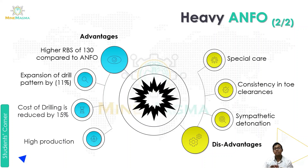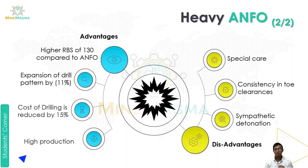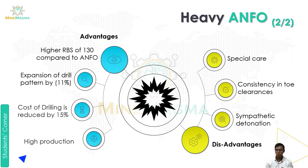The advantage of heavy ANFO is a higher RBS of 130 compared to standard ANFO. The disadvantages include consistency and toe-clearance problems, as well as sympathetic detonation — the risk of unintended detonation. These are the advantages and disadvantages of heavy ANFO.